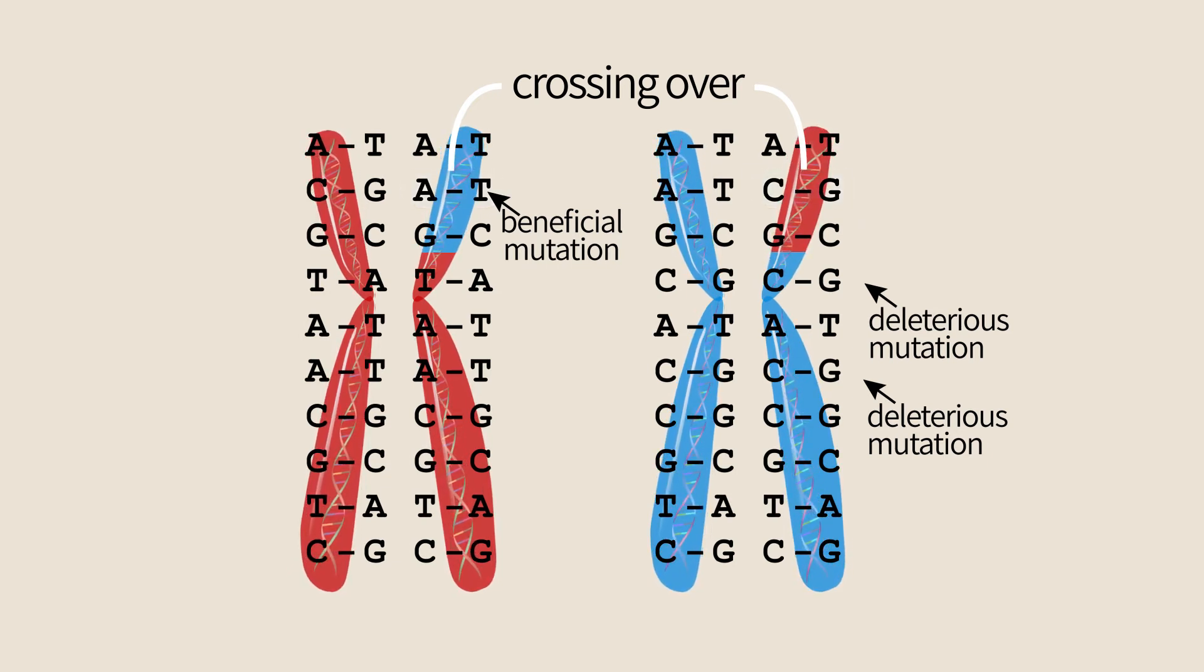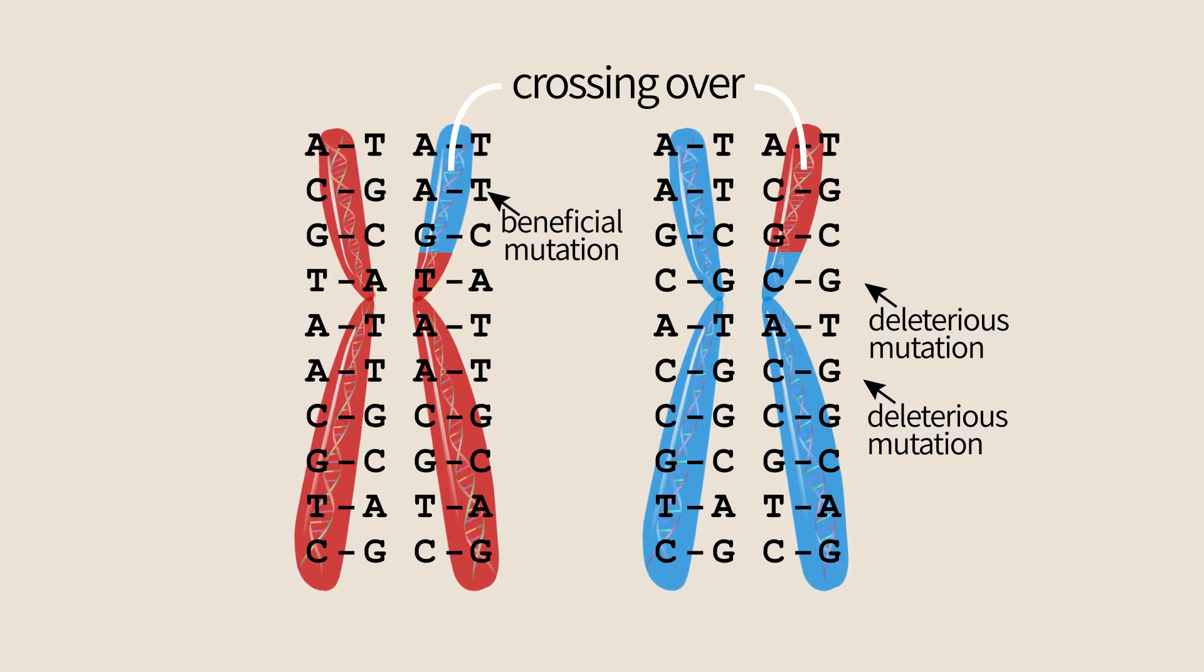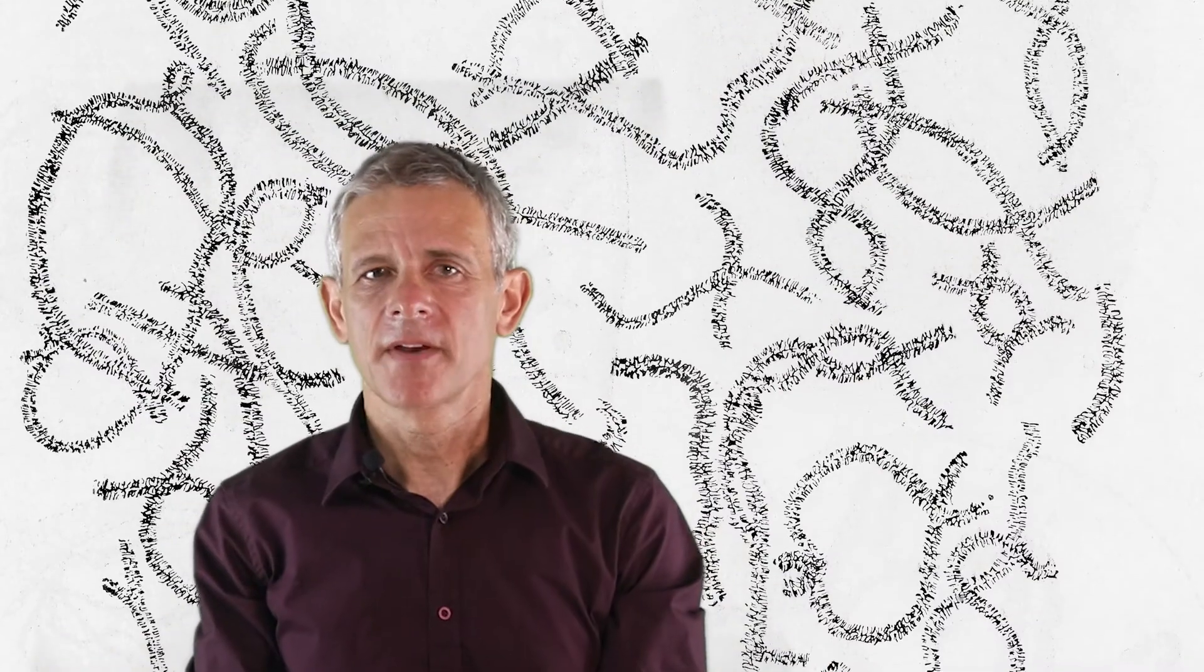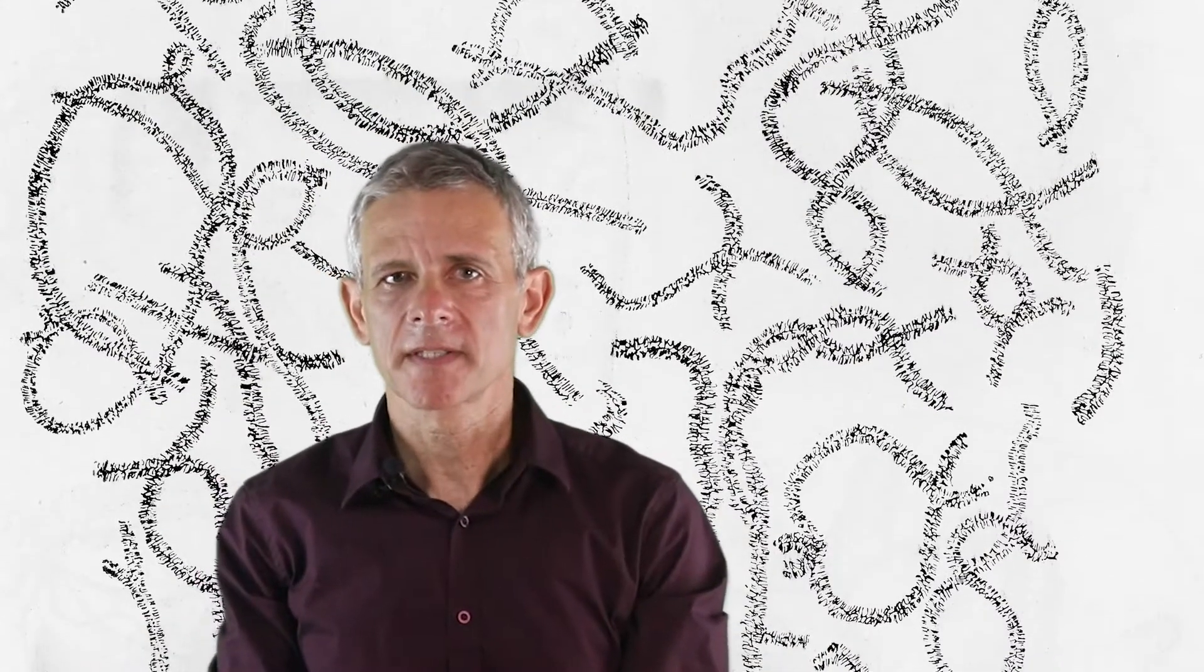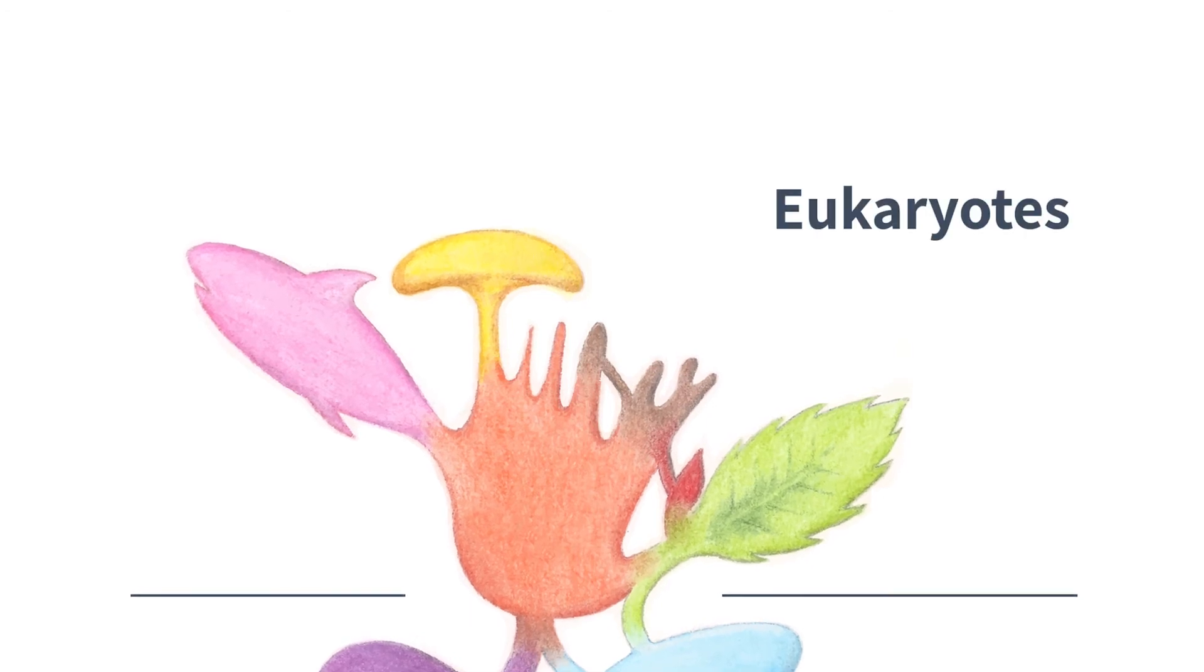Thanks to crossover, meiosis is a process that repairs chromosomes and removes the deleterious mutations. Meiosis is very ancient in evolution, and the process is highly conserved and similar in all eukaryotes, animals, plants, fungi and protists.